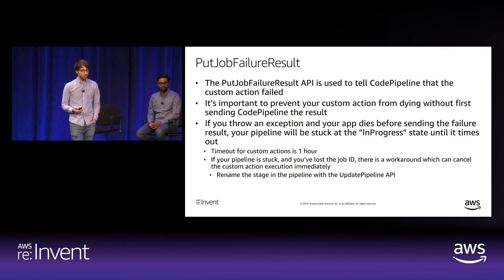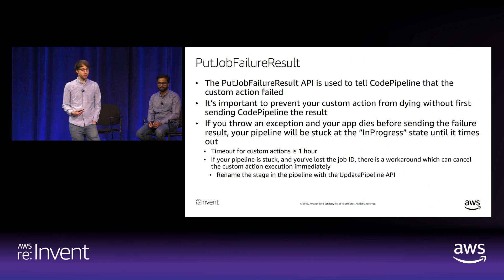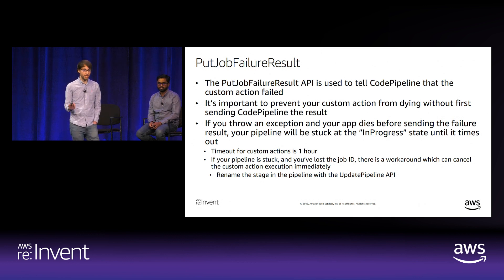PutJobFailureResult is used to tell CodePipeline that the custom action has failed, and it's really important to prevent your worker from dying without first sending the result. If your app dies before sending the failure result, your pipeline stays stuck in the in-progress state until it times out—a one-hour timeout, making your pipeline inoperable until then. To recover: rename the stuck stage in your pipeline, or delete and recreate the pipeline.